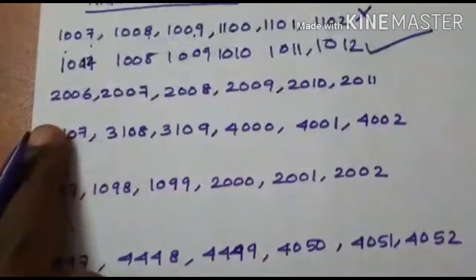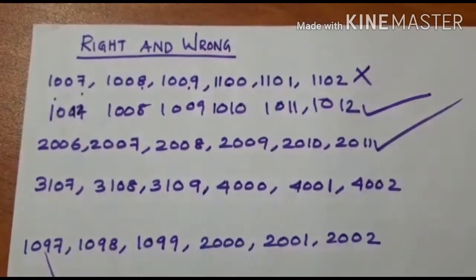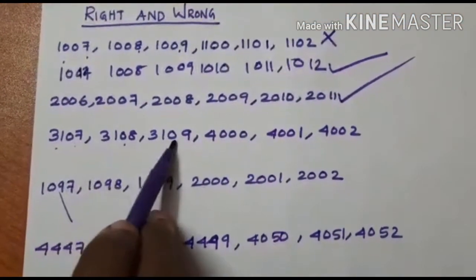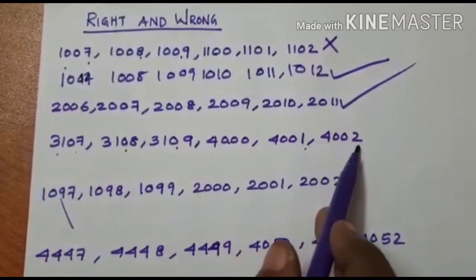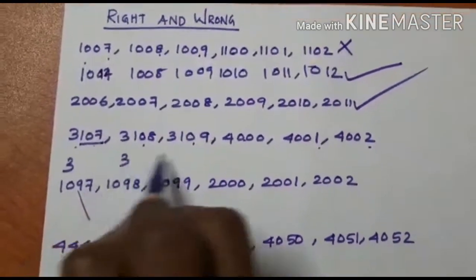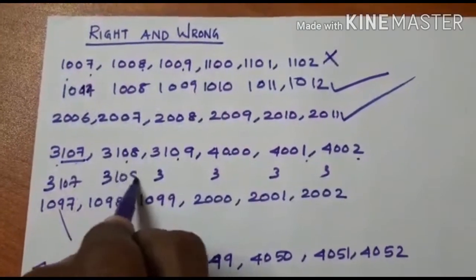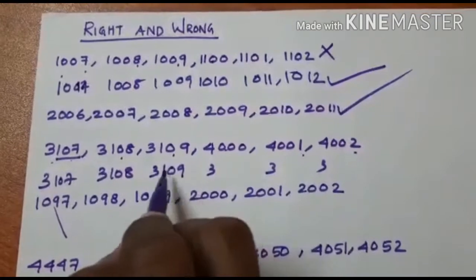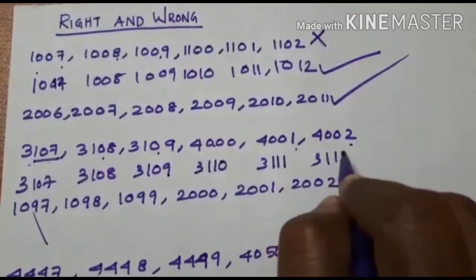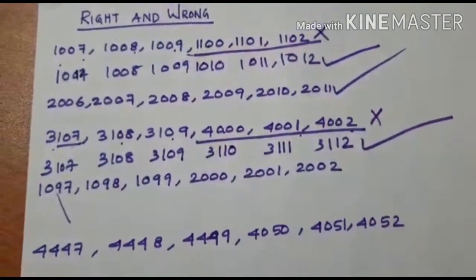Next: 2006, 7, 8, 9, 10, 11 — it is correct, already correct. Then 3107, 108, 109, 4000, 4001. Here the numbers change from this place. 107, first digit is same. 107, 108, 109 — then after 109 that is 110, then 111 and 112. This is wrong. Here also this must be wrong. This is wrong and this is the corrected pattern.